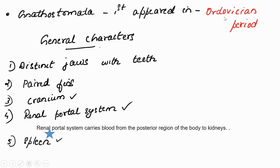Gnathostomata first appeared in the Ordovician period. Its general characters include: distinct jaws with teeth, paired fins, a cranium — the outer protective cover over the brain — and a renal portal system, which is the system of blood vessels carrying blood from the posterior region of the body to the kidney.